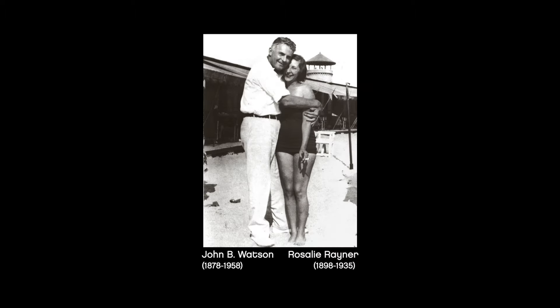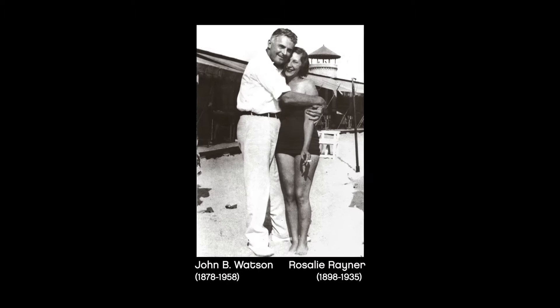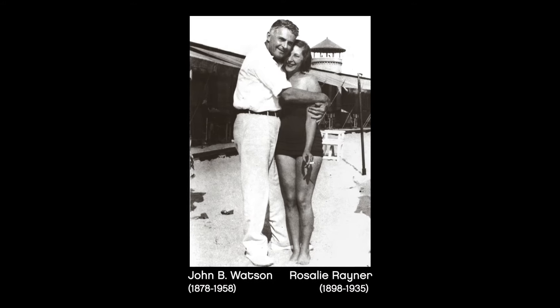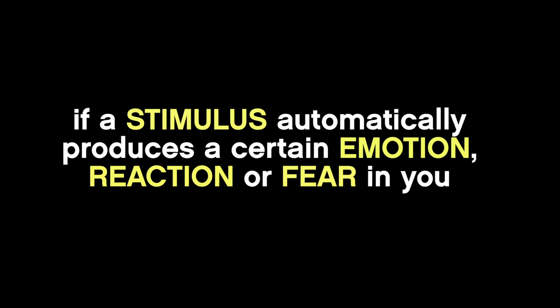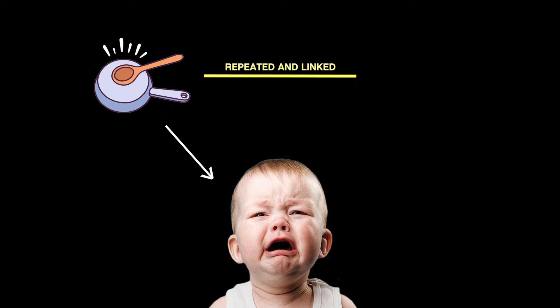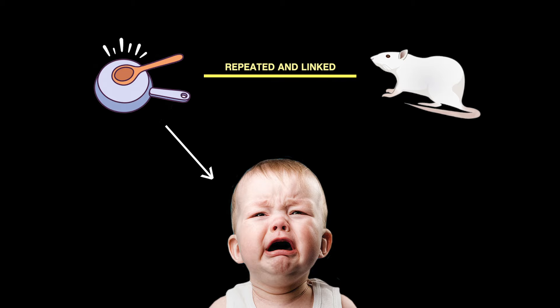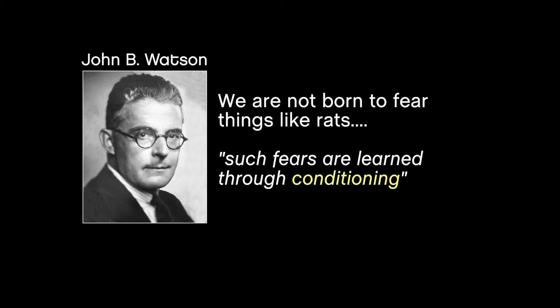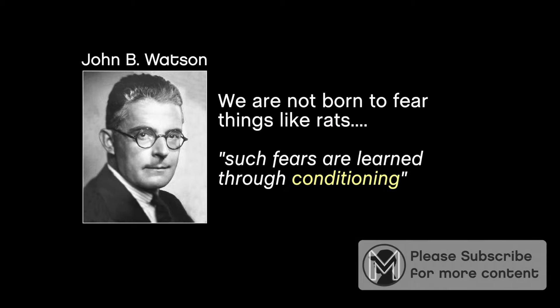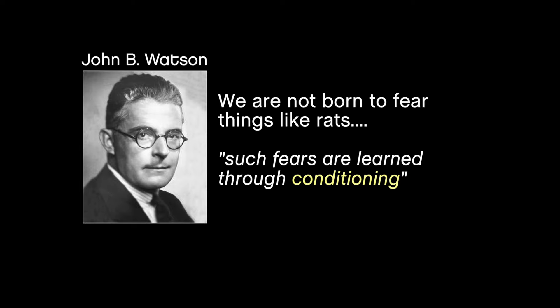You can make a dog think that a bell means food. John Watson and soon-to-be wife Rosalie Rayner of Johns Hopkins University theorised that if a stimulus automatically produces a certain emotion, reaction or fear in you — like a loud noise — and that stimulus is constantly repeated at the same time as something else, like a rat, the rat would become associated with the fear you initially felt. Watson maintained that we are not born to fear things like rats, but that such fears are learned through conditioning. This helped him create his most famous experiment.